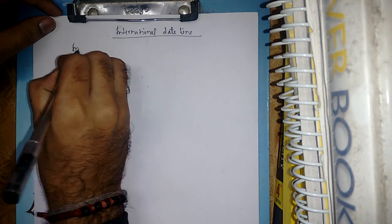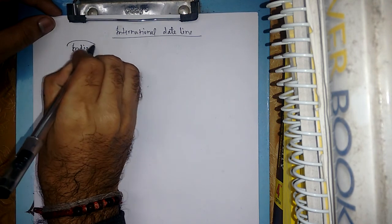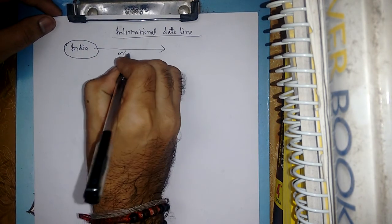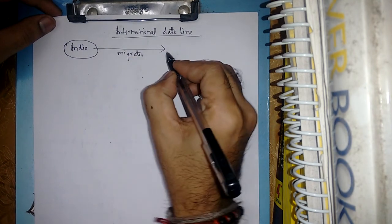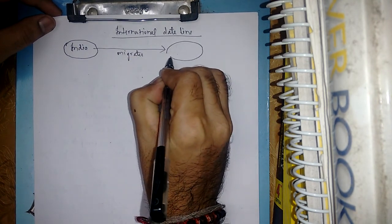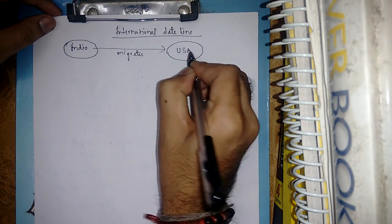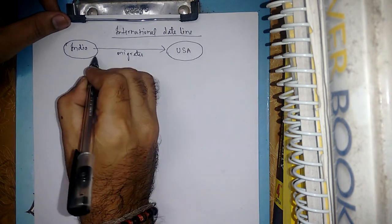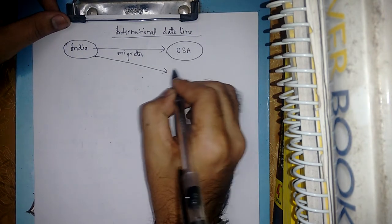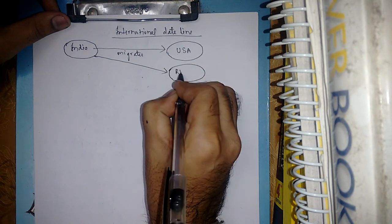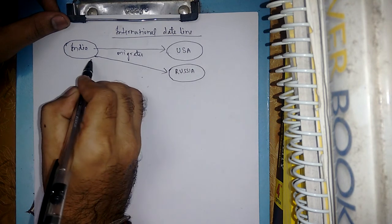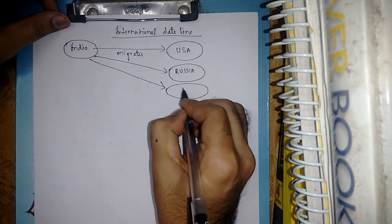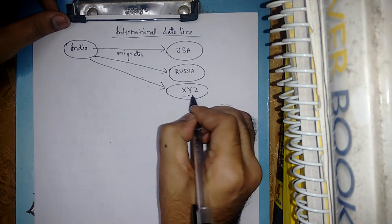So the International Dateline — everybody knows that suppose somebody is living in a different country. Various countries — suppose I am in India, and an Indian citizen migrates to another place, like the USA, or somebody from India migrates to Russia.